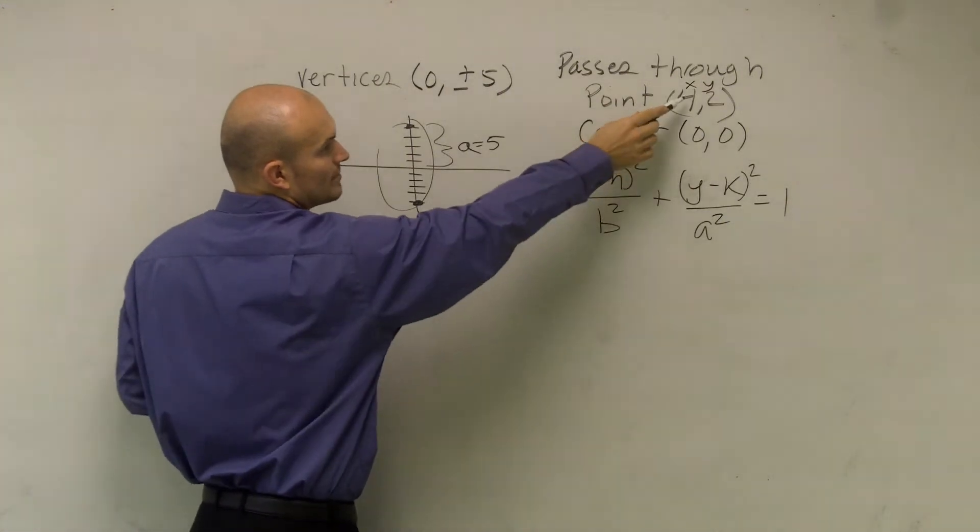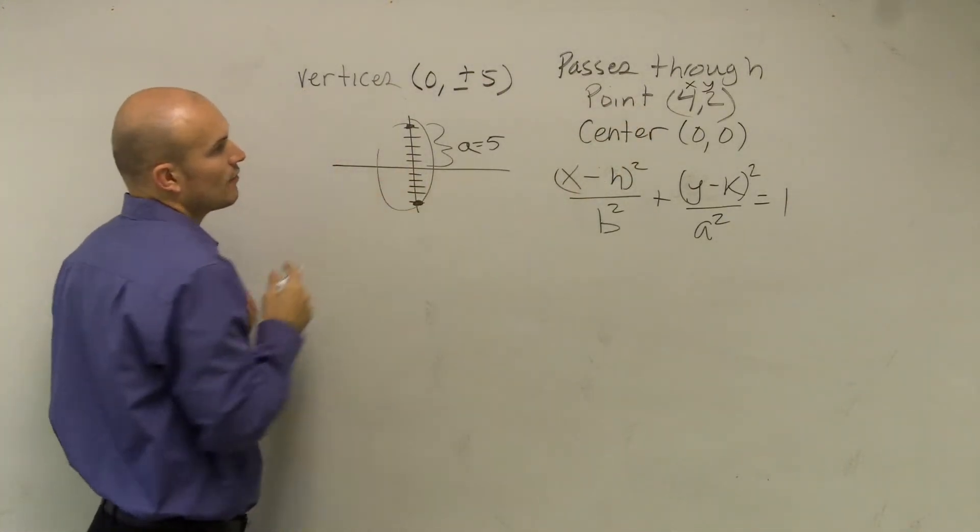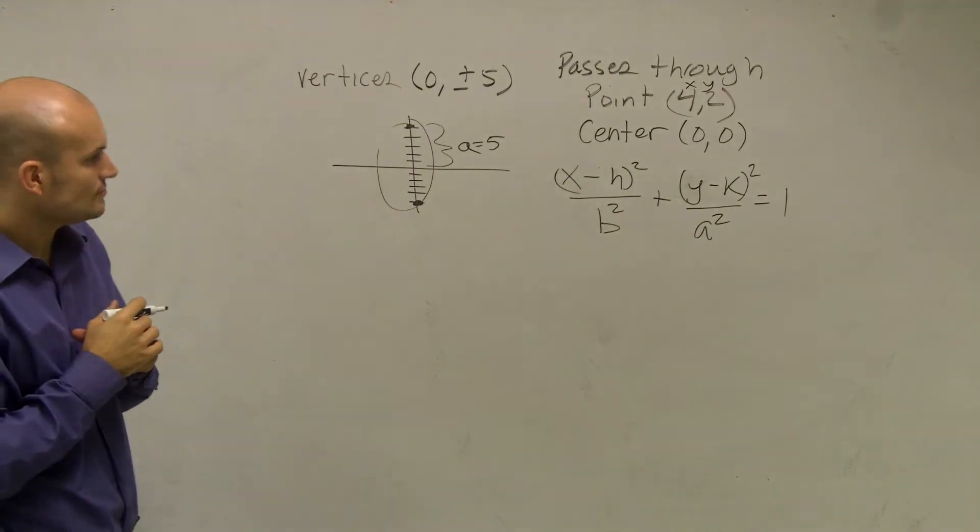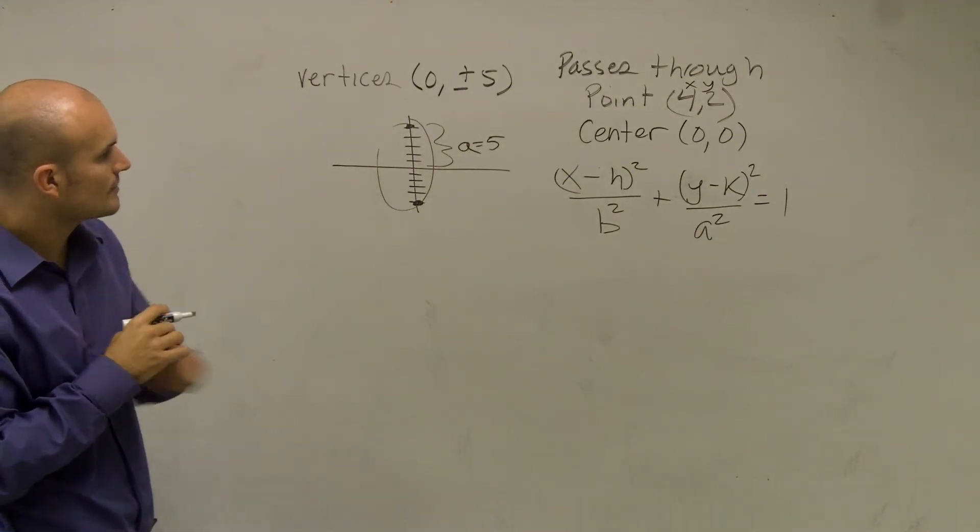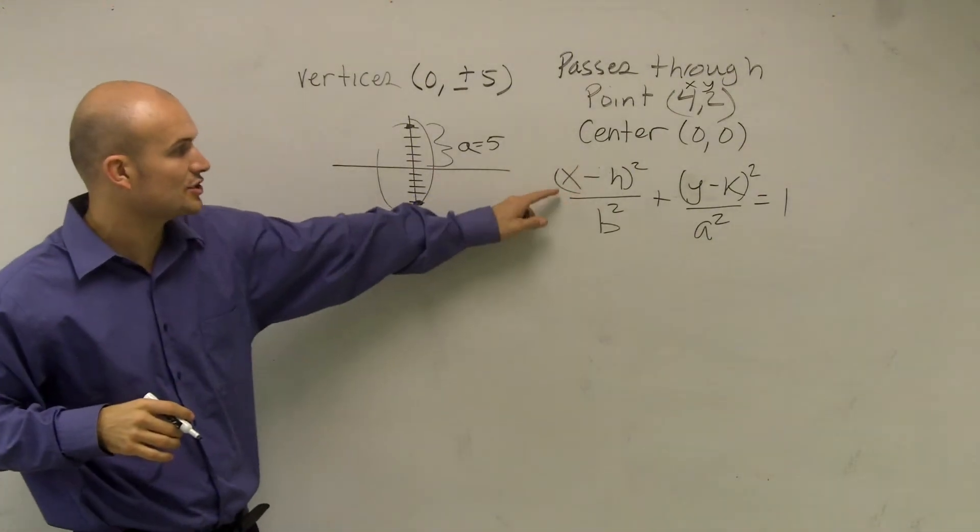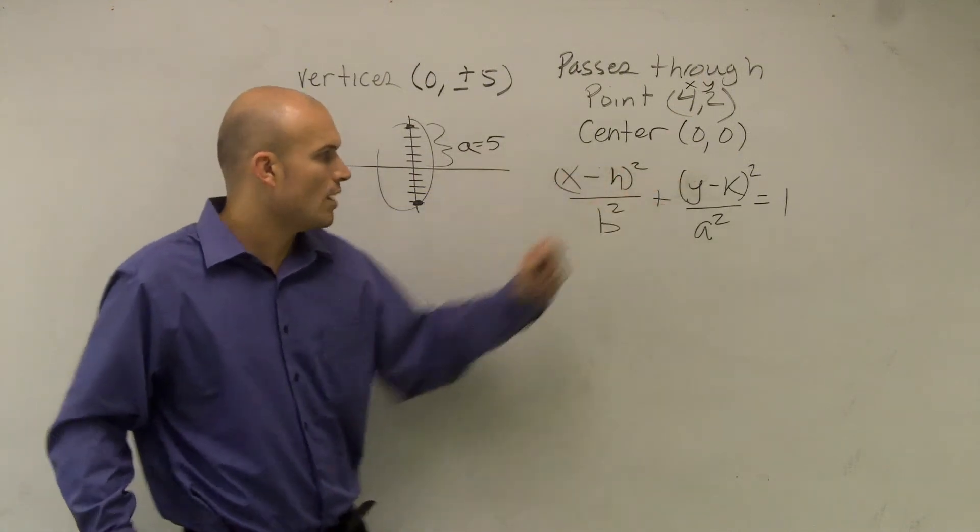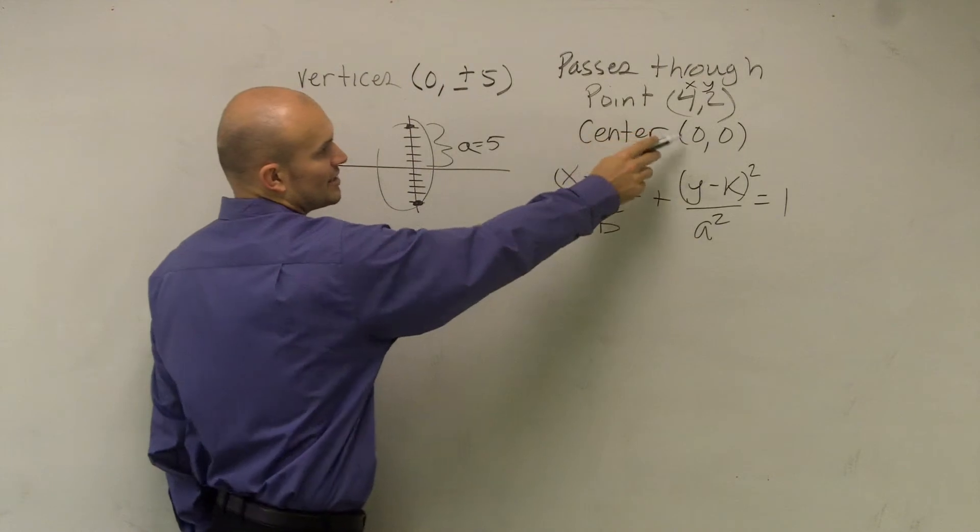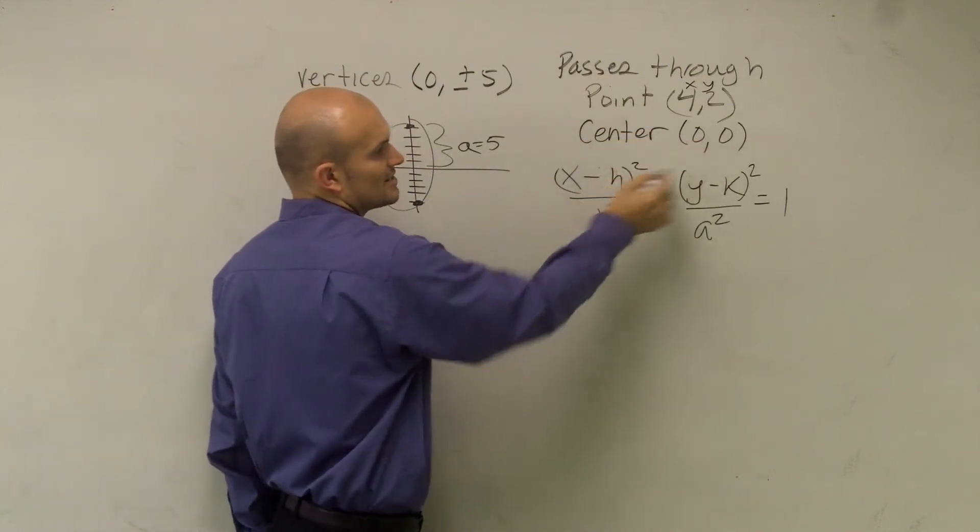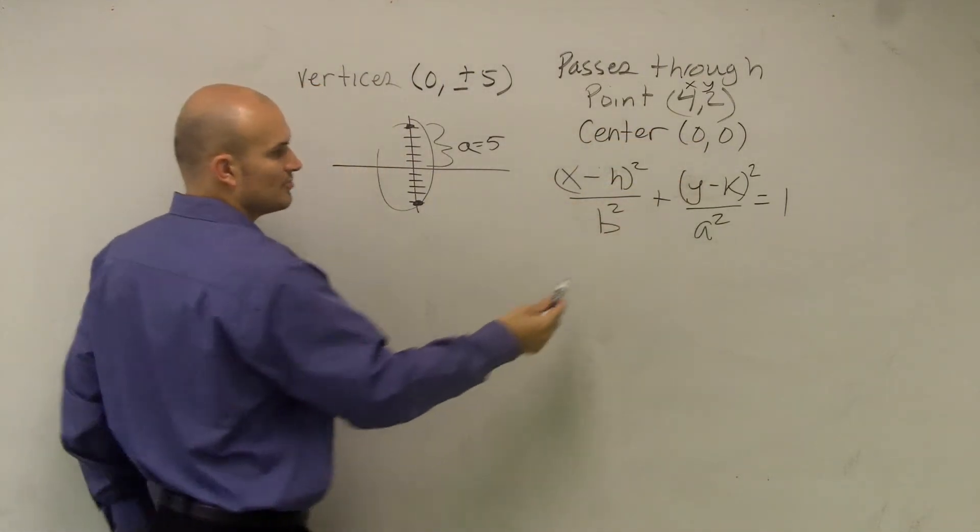I have a coordinate point (4, 2), so therefore I know that my ellipse is going to go through the coordinate point when X equals 4 and Y equals 2, and I know my center, which is H and K, is going to be 0.